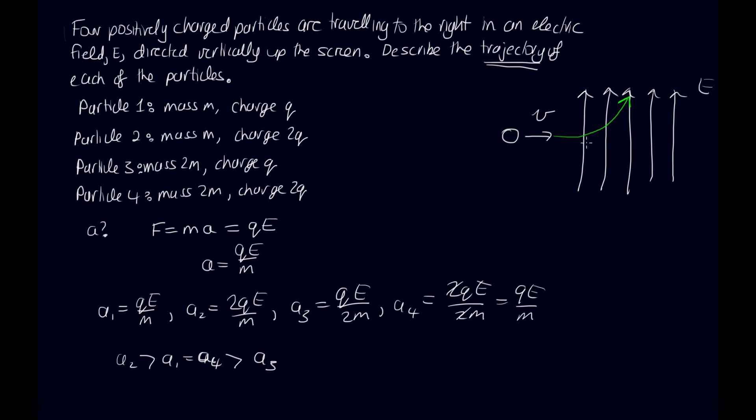It will still keep some horizontal component, but it will have an ever-increasing vertical component. So let's call that 2. And then we've got particle 1 and 4 will accelerate the same amount. So they're going to bend up like this. So that is 1 and 4.